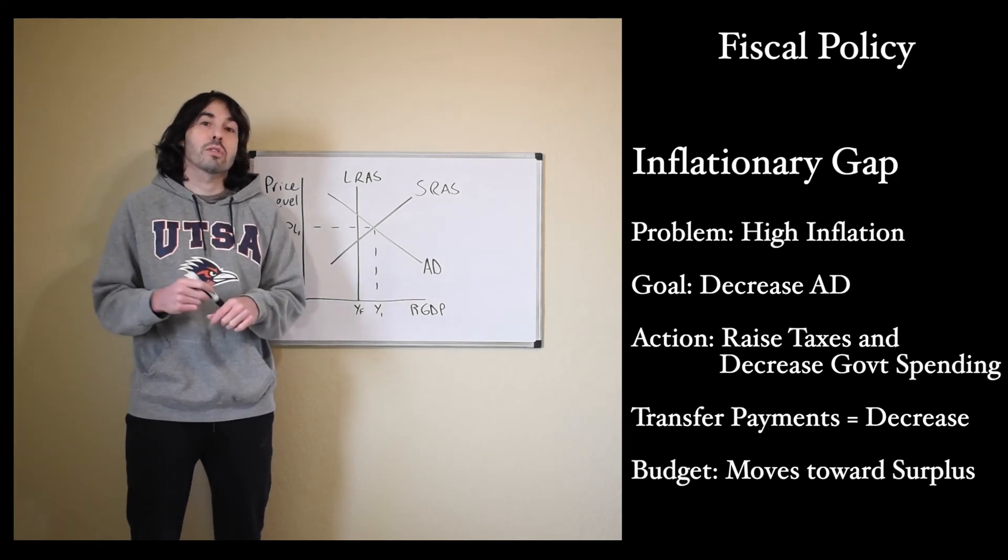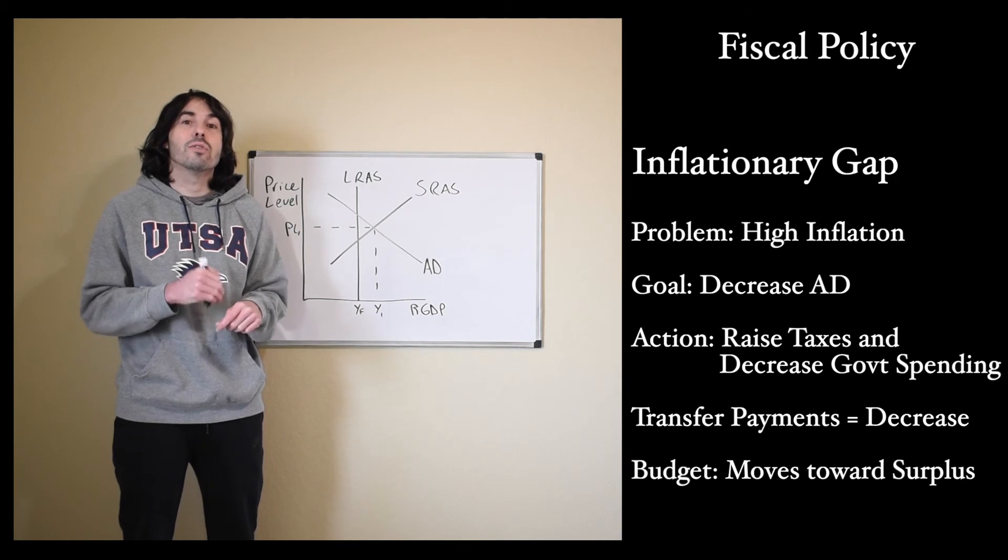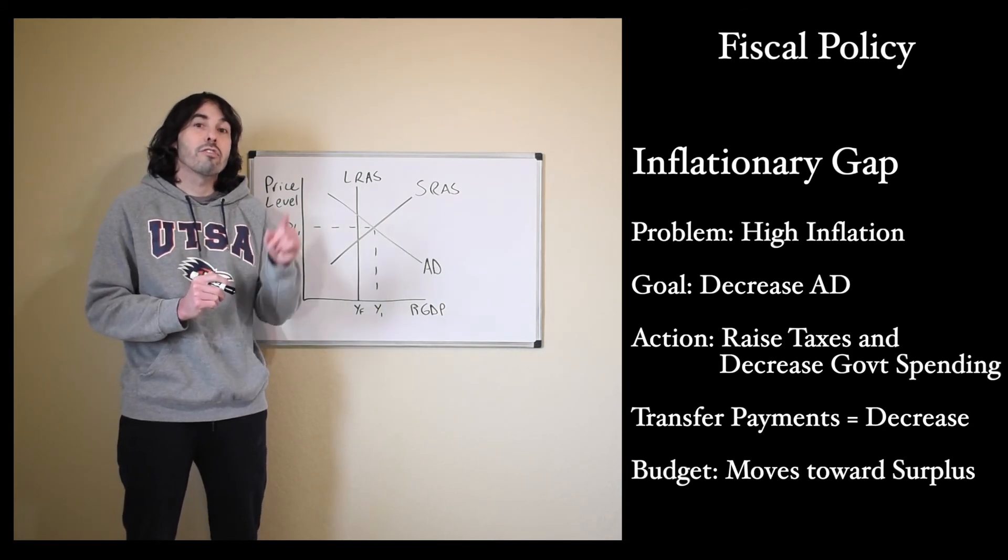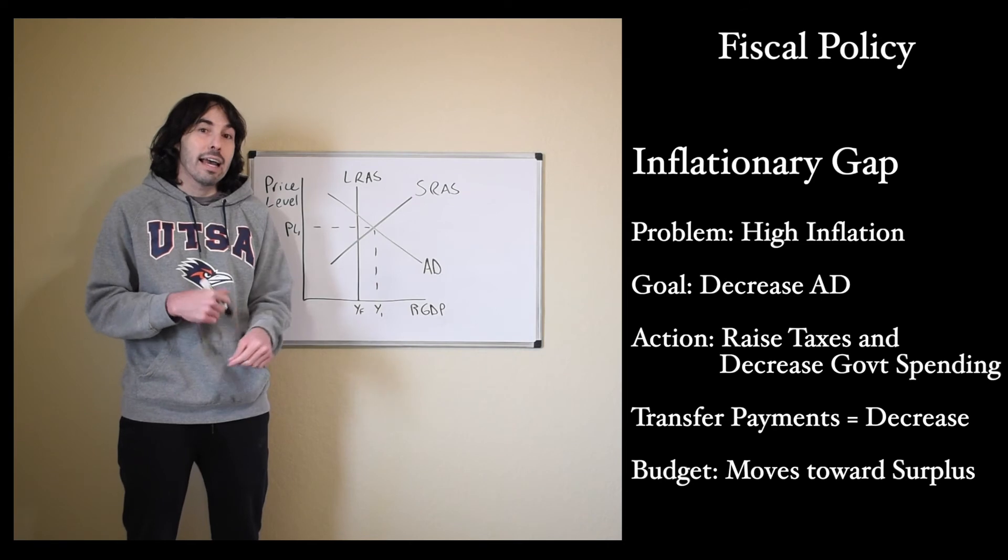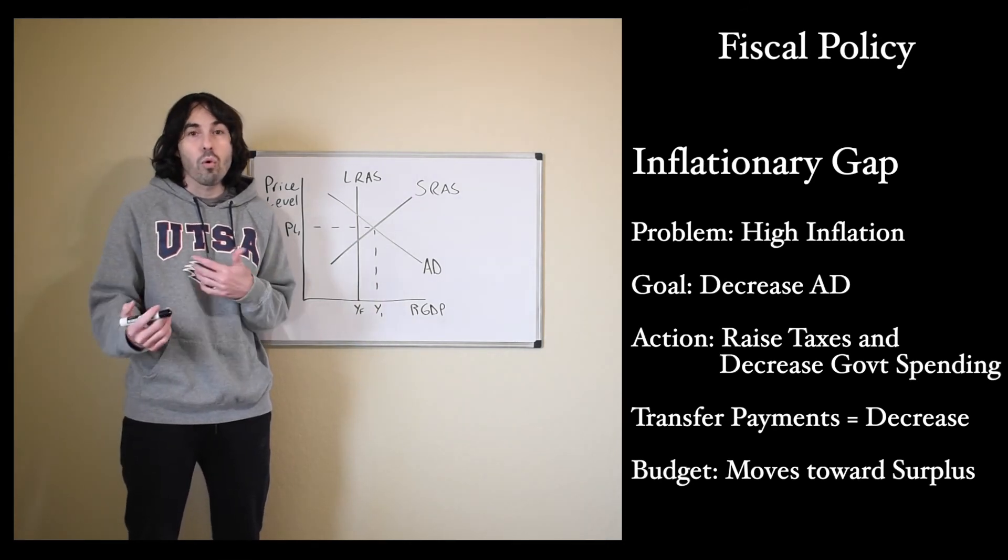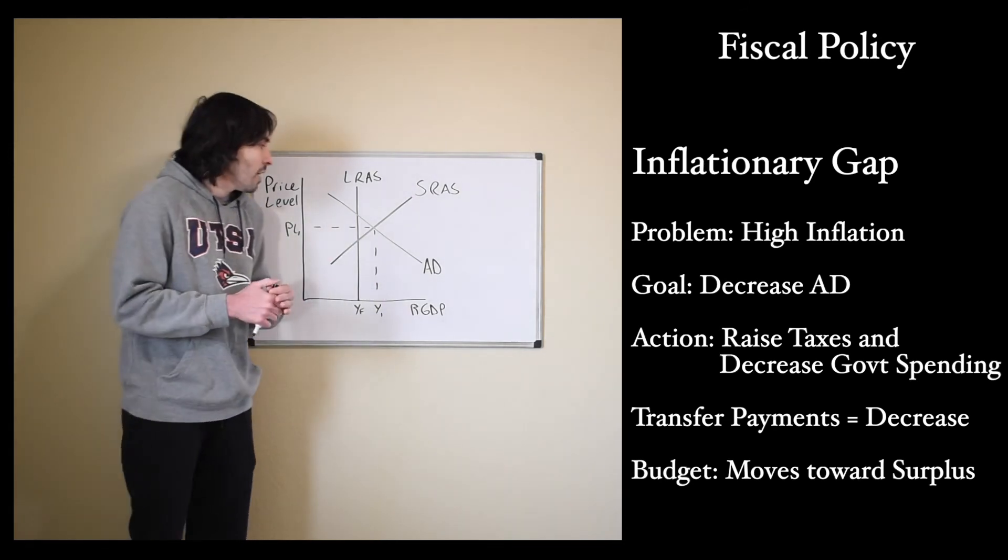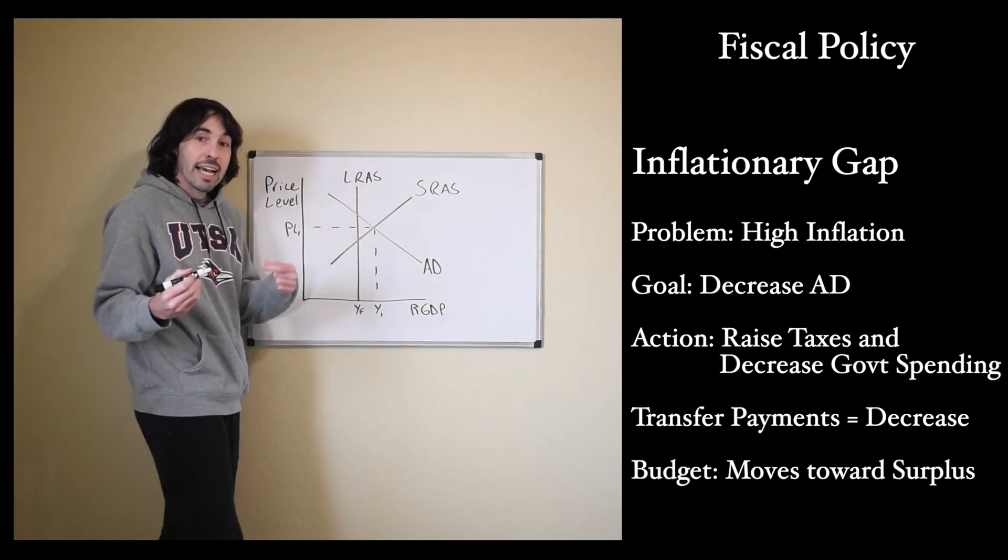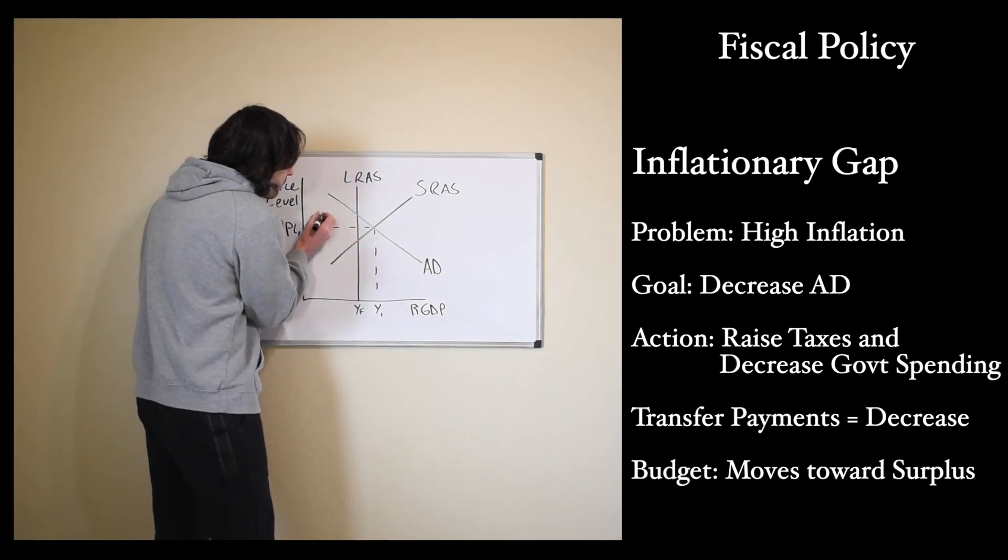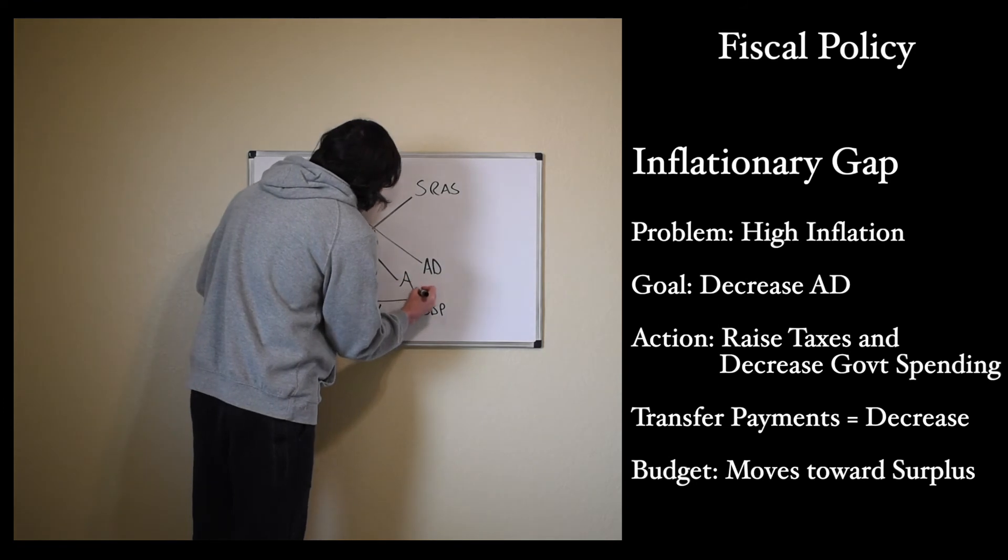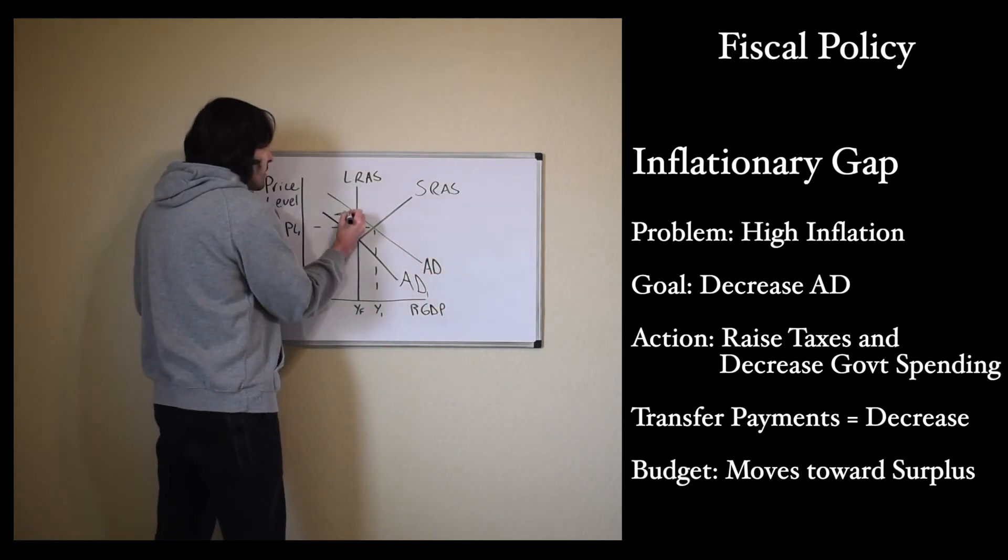If the government wants to do something more than that, then they would need to do discretionary fiscal policy that would involve raising taxes and decreasing government spending, or one or the other. All right. So if we increase taxes and decrease government spending, aggregate demand will decrease and shift to the left. That ended up looking kind of weird. Oh, well.